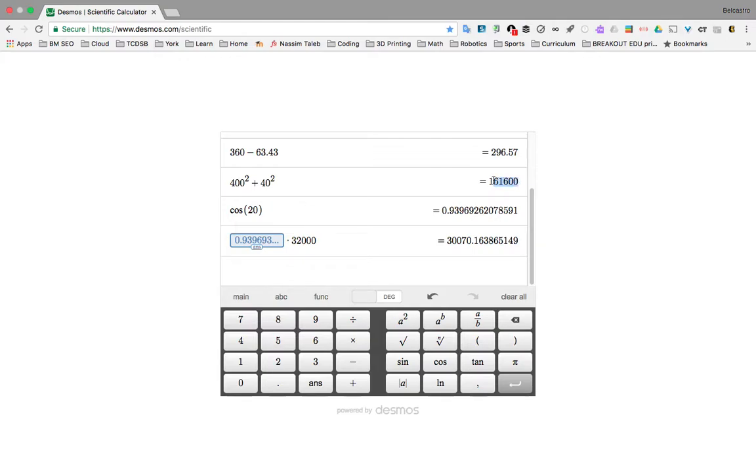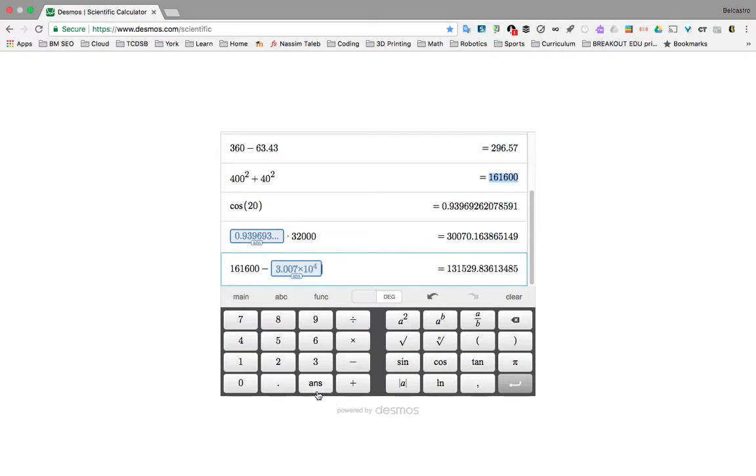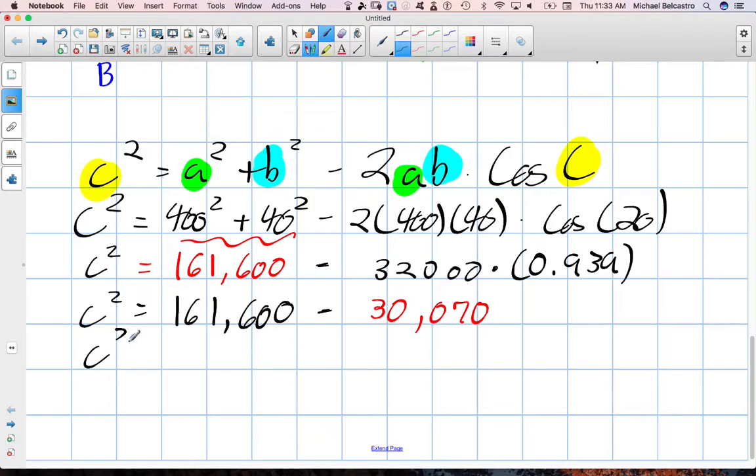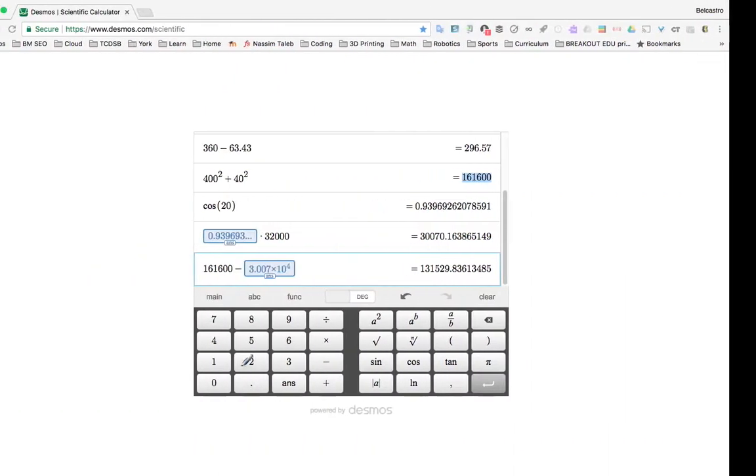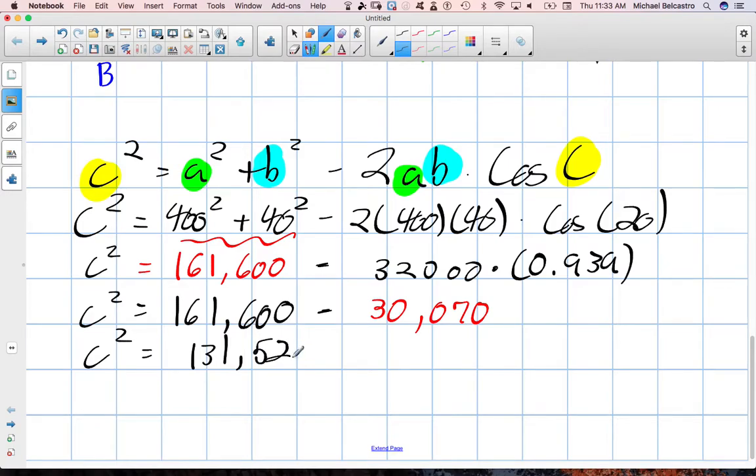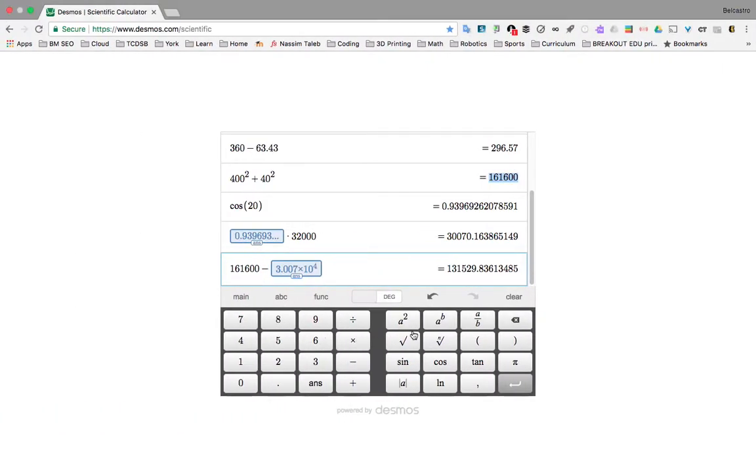I'll type it in. Minus our answer from before. That's even more exact. Beautiful. So, we get approximately 131,529. We'll write it in. It's kind of like an archiving process. That way, if we make a mistake, we're able to see what we had done right before. 131,529.8.